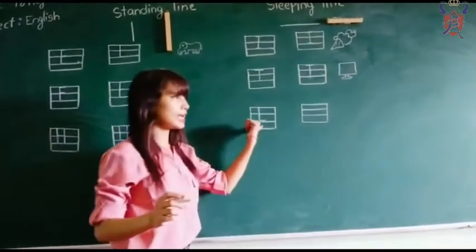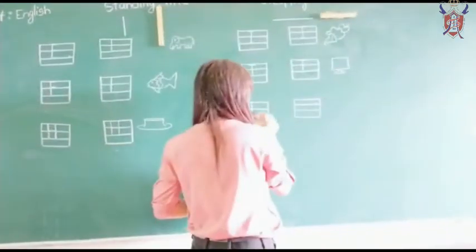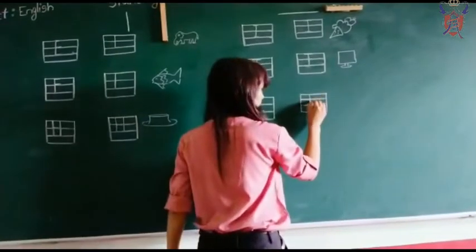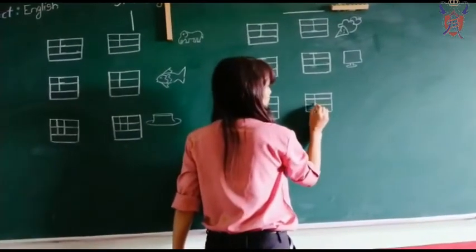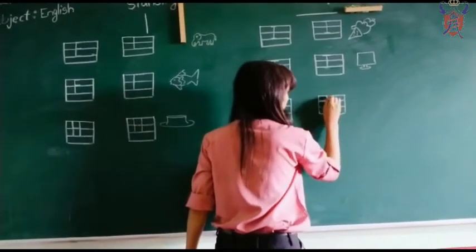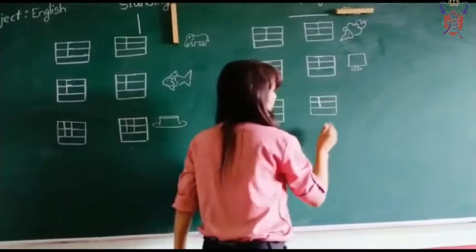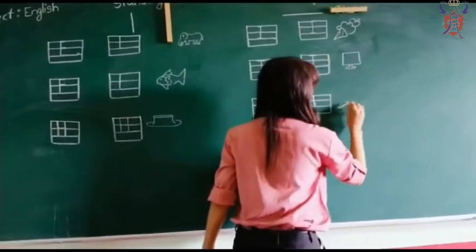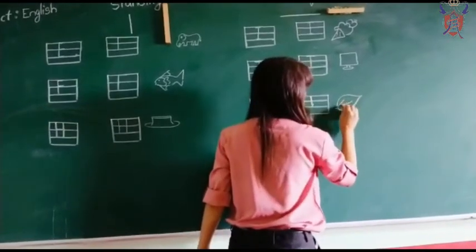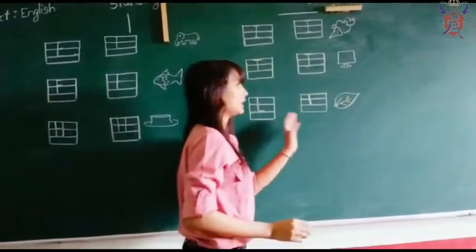Next letter is L. L for leaf. First you have to draw a standing line, then you have to draw a sleeping line. L for leaf.